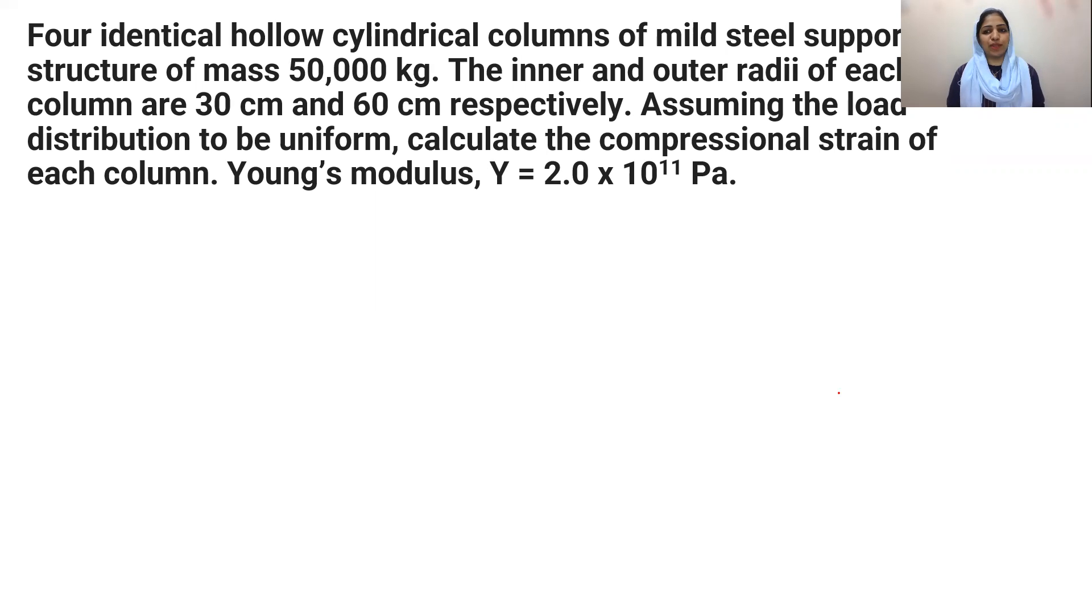Now, we have to make the 4 identical hollow cylindrical columns of mild steel support a big structure of mass of 50,000 kg.